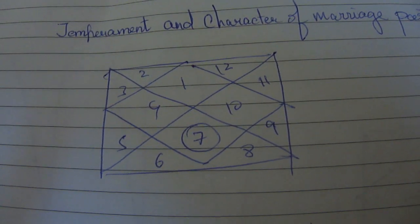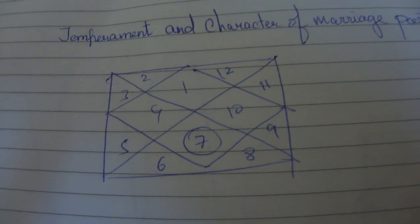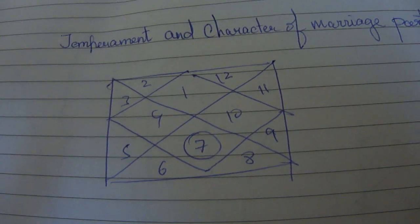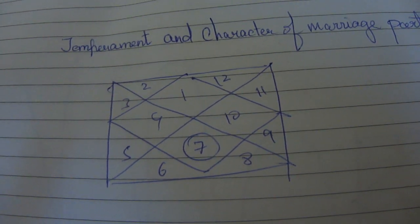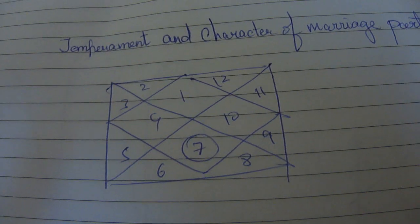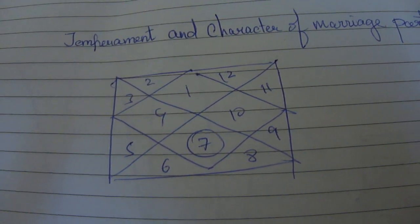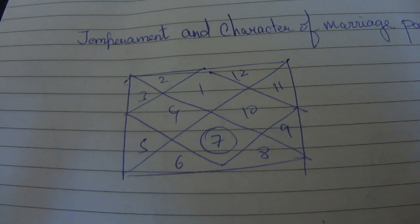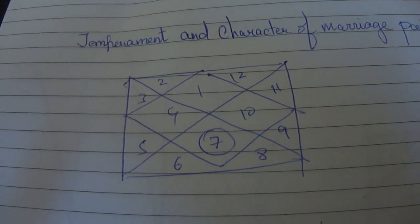Whereas when moon comes in the 7th house, then you can expect a more gentle approach or a more gentle partner, emotional, very domestic type, very home loving, family oriented type of a partner, very good with emotions. But one drawback is that this person can be waxing and waning in moods, can be ups and downs in terms of moods.